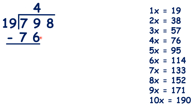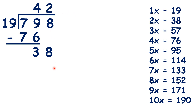79 minus 76 is 3, and we can bring down the 8 so that we have 38 divided by 19. That's exactly 2, so we can write 2 in our answer, and we have nothing left to divide, so 798 divided by 19 is 42.